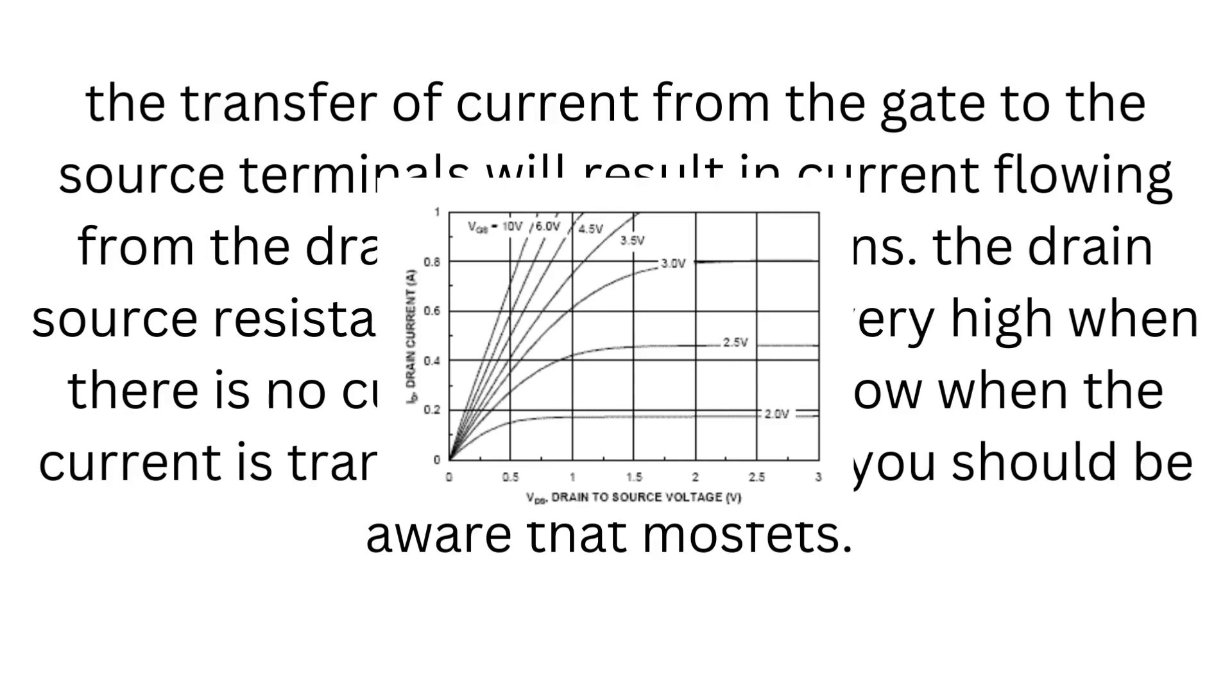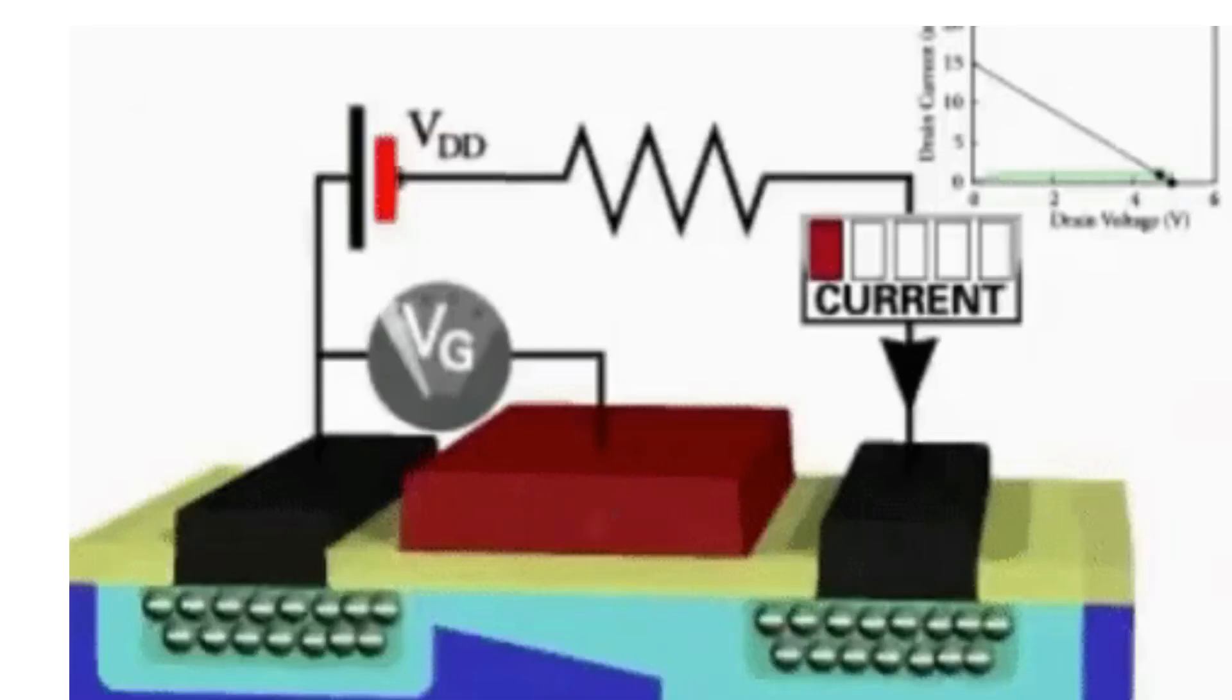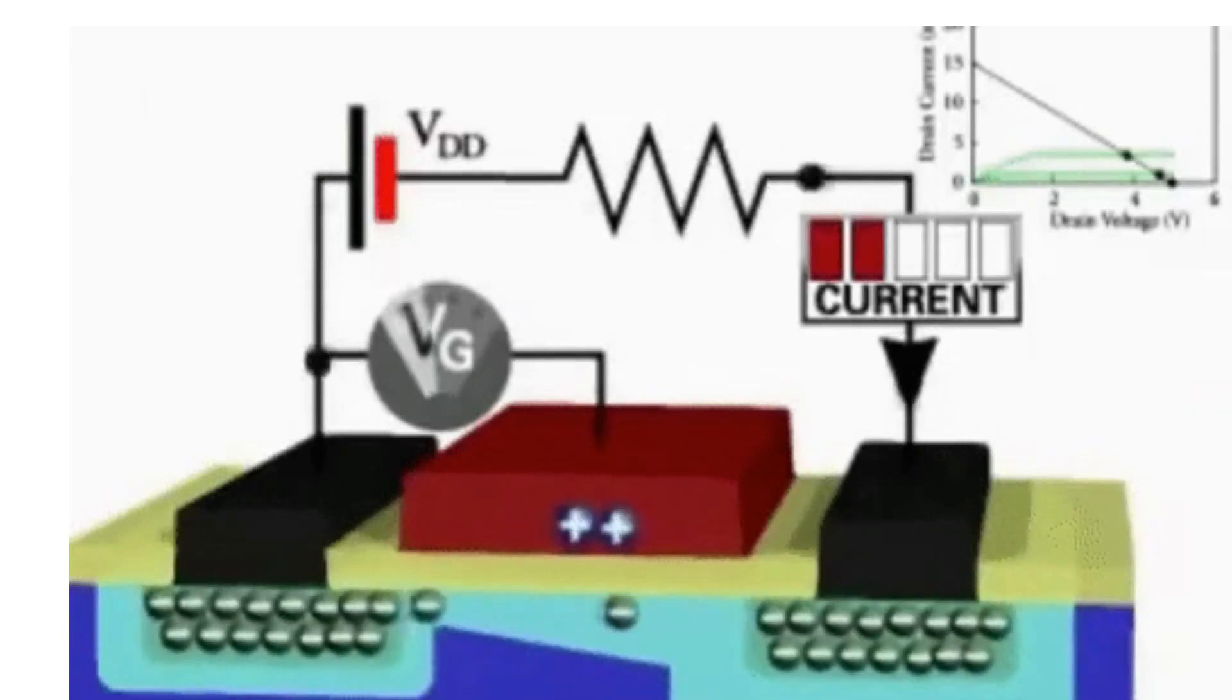However, you should be aware that MOSFETs complete with microcontrollers may require 10 to 15 V gate source potential difference for the lowest level of drain source resistance with a microcontroller operating on 5 V or 3.3 V.